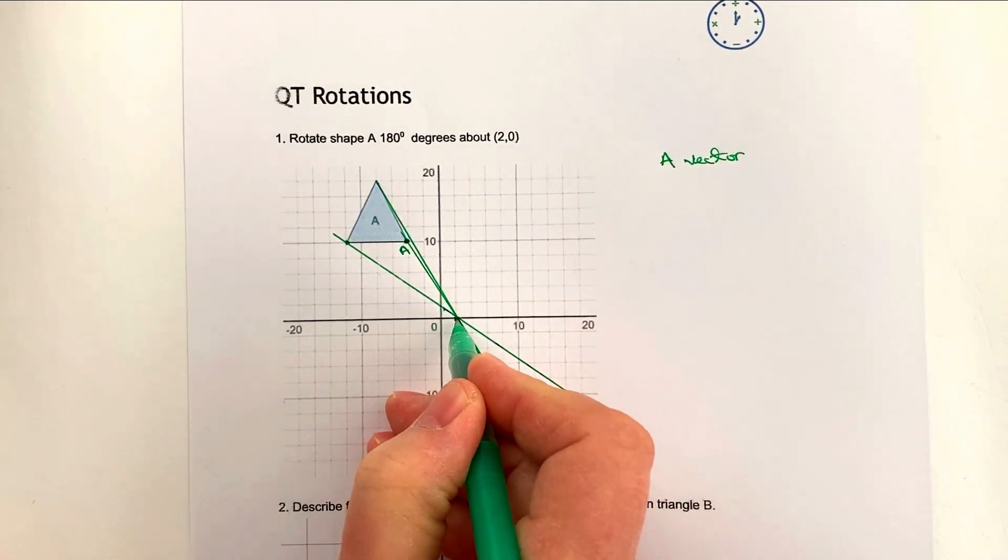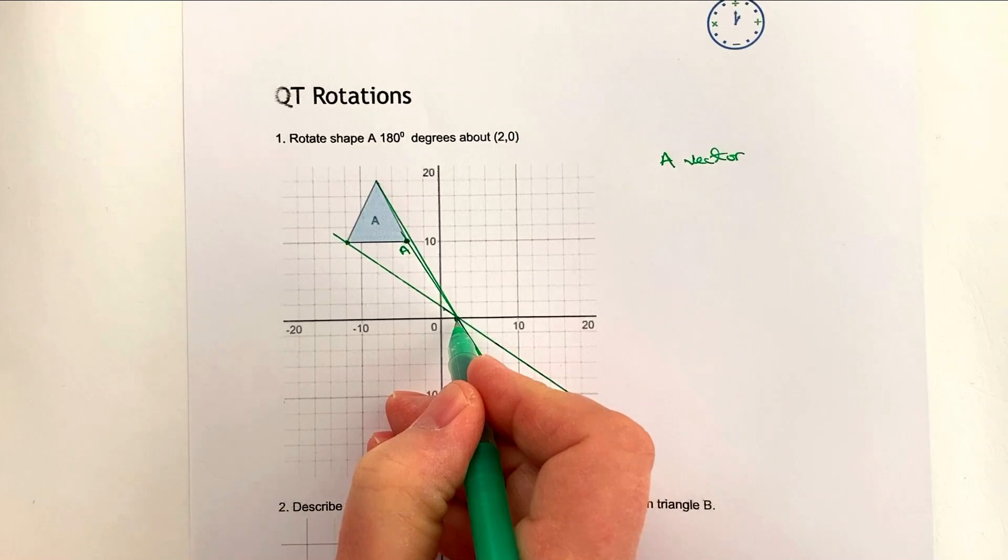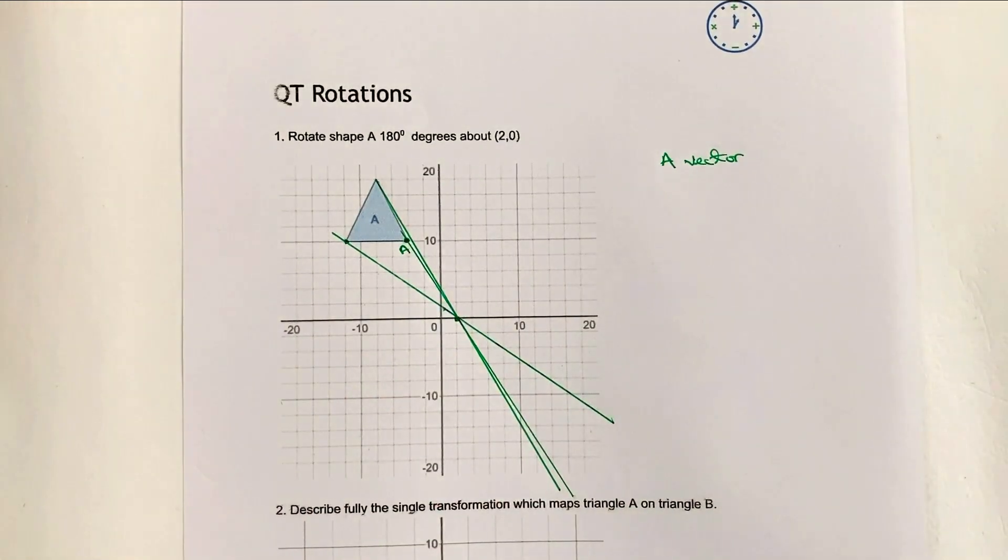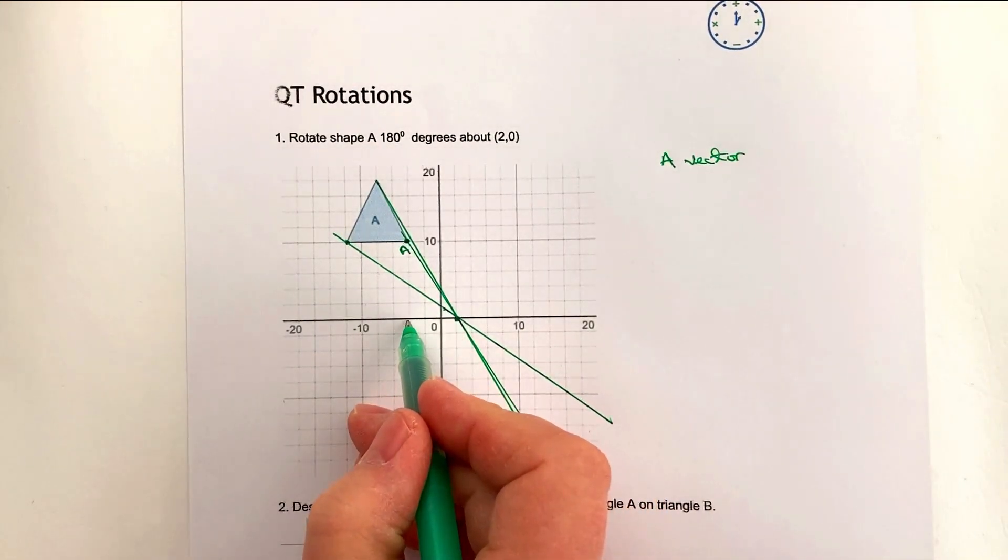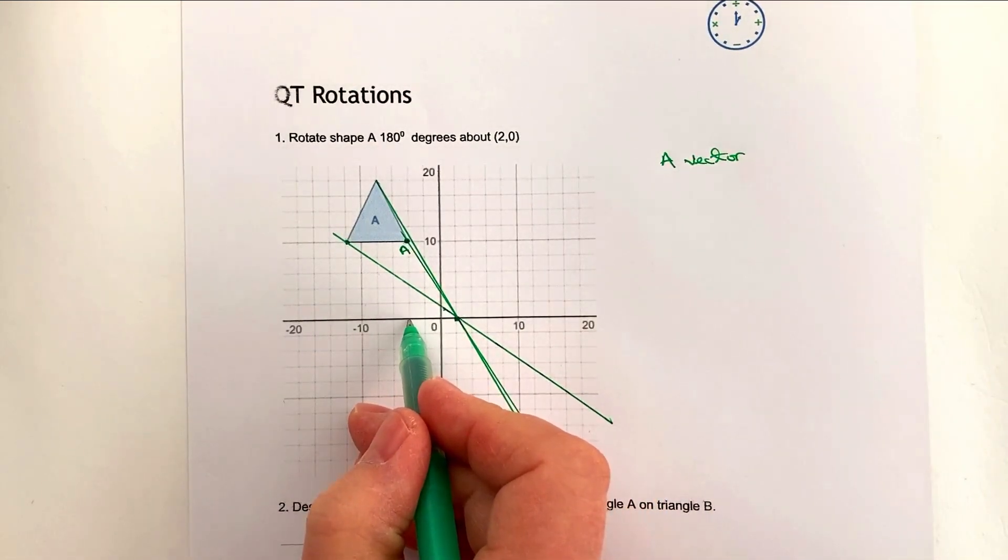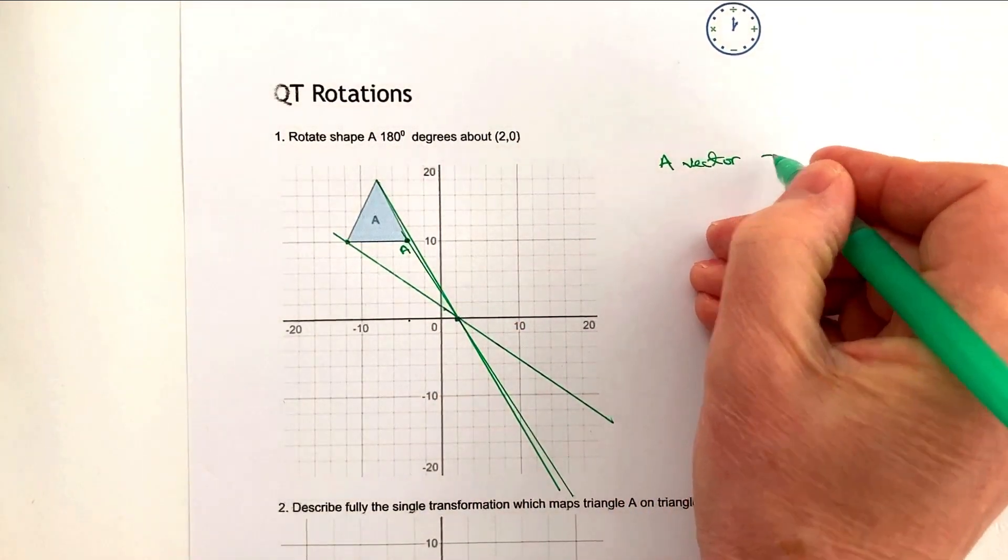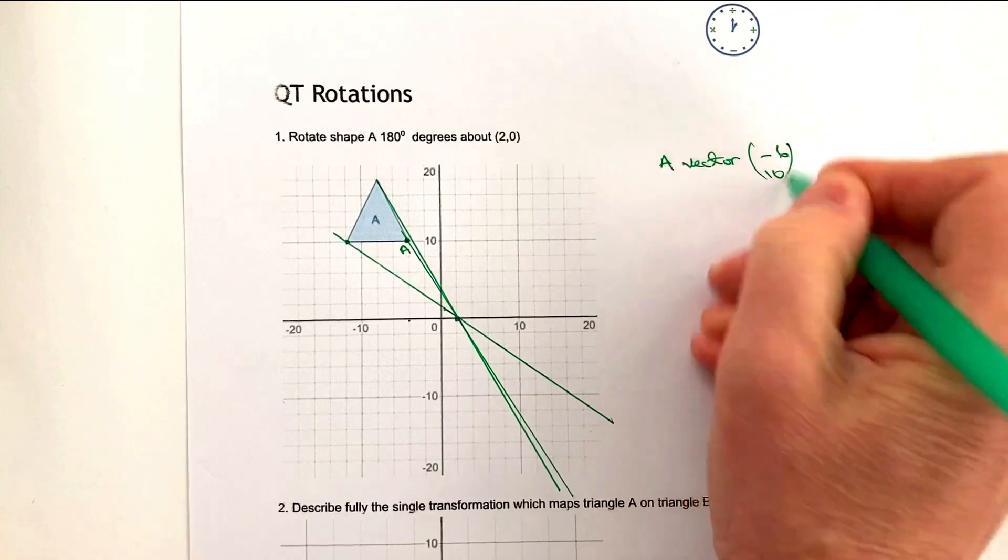They say that actually this point to go from here to A is a vector of minus 6 in the x direction - I wish I had not started this now. So it's a vector of minus 6 in the x direction and plus 10 in the y direction. So we've got minus 6 and 10.